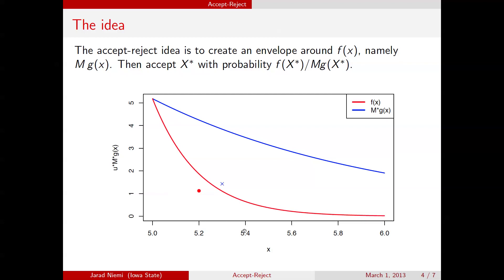So the second example here, we have x is 5.3. And our uniform times m times g of x landed us here, which was above the density for f, and therefore we did not accept. That's a blue x for not accepting.